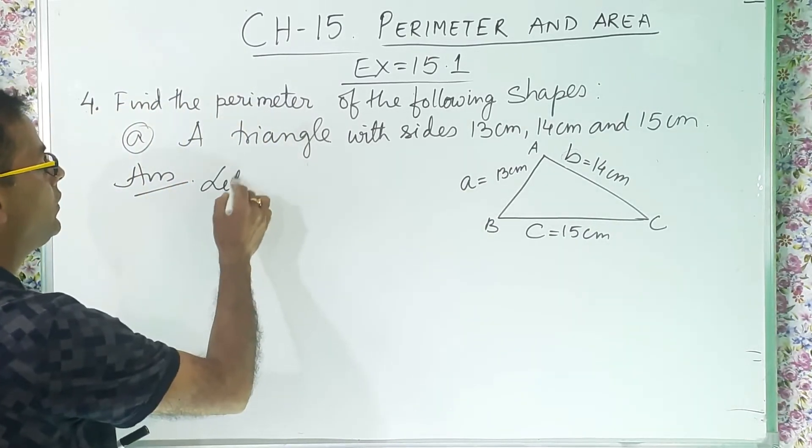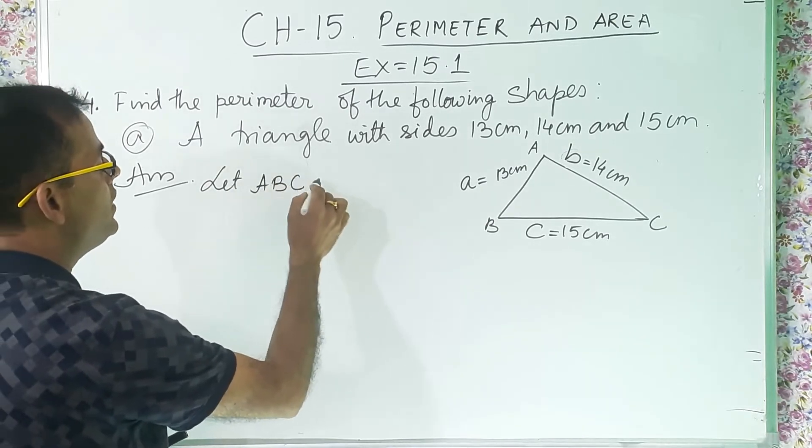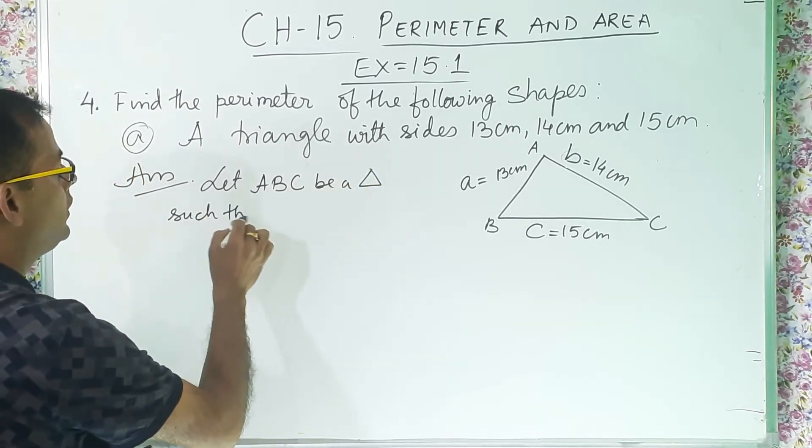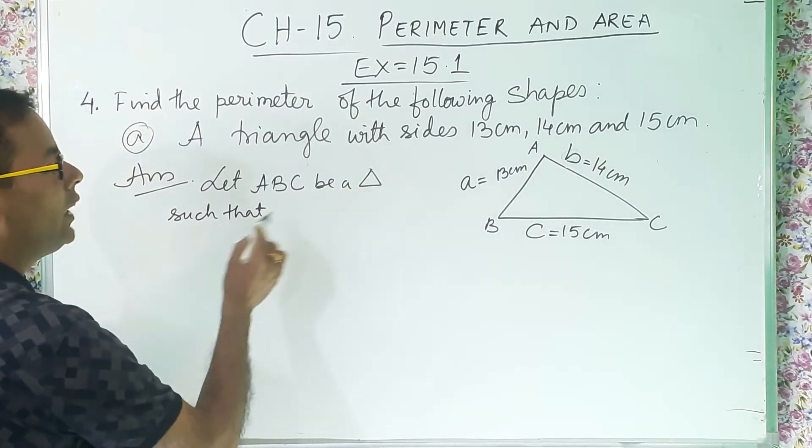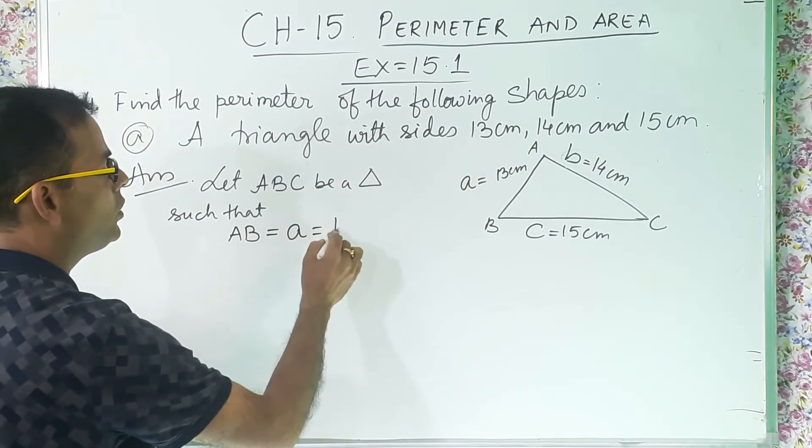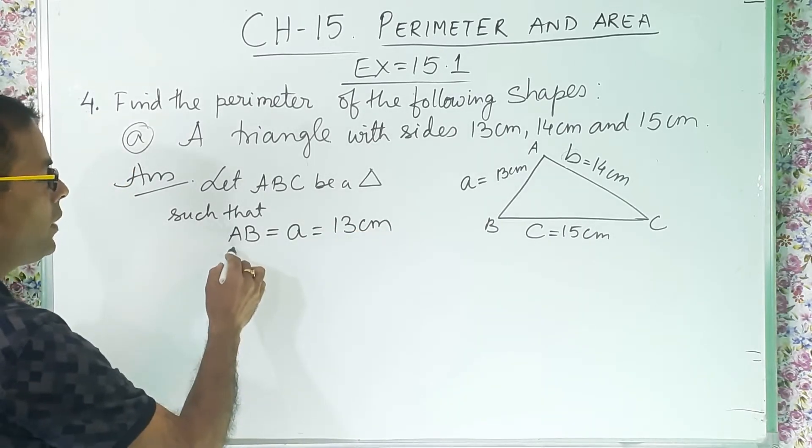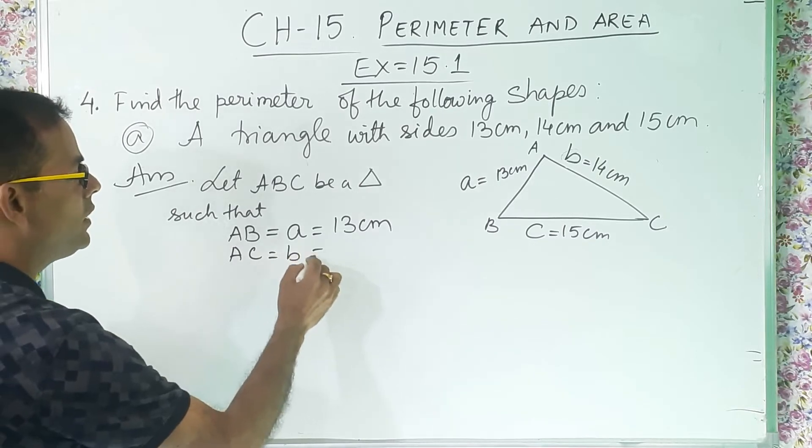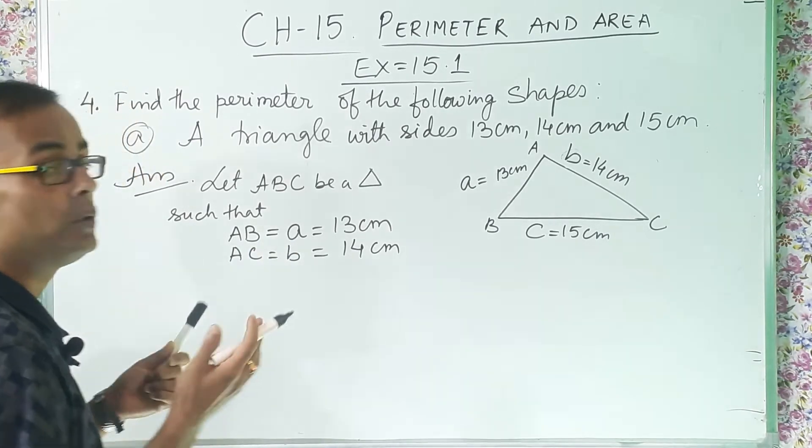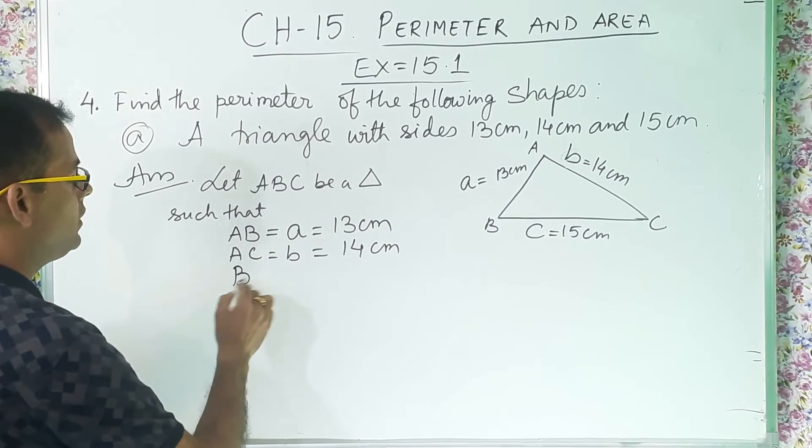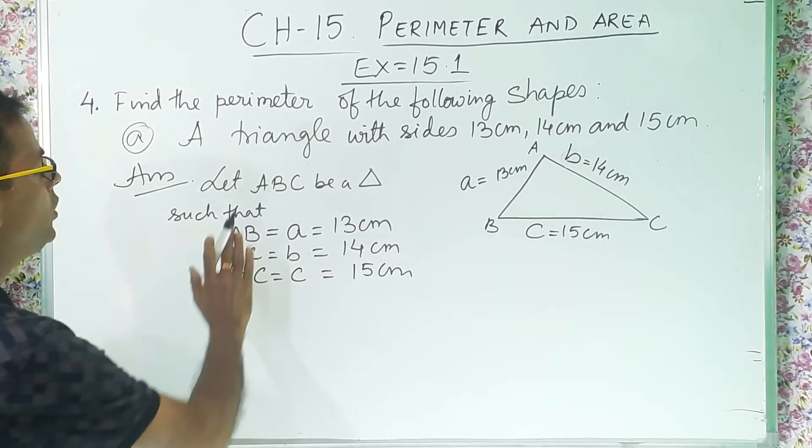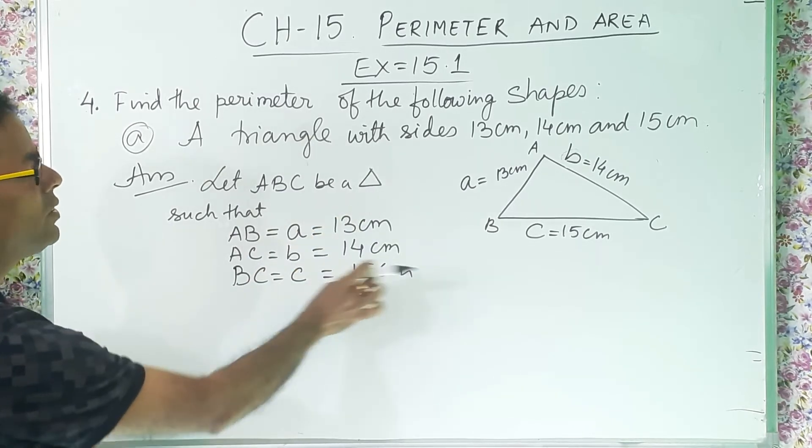Now I will write here. Let A, B, C be a triangle such that AB equal to small a equal to 13 centimeter. Then AC equal to small b is equal to 14 centimeter. I am doing this sum a little bit long, lengthy. You can do it in short also. Then BC equal to small c is equal to 15 centimeter. If you want to do it in short, then do not write this one. Only write a is equal to, b is equal to, c is equal to.